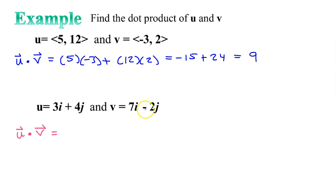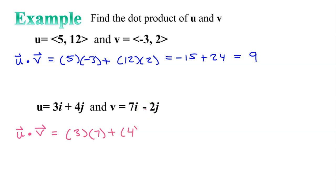If this is U and this is V, then the dot product will be 3 times 7 plus 4 times negative 2. So that's 21 minus 8, which is 13.